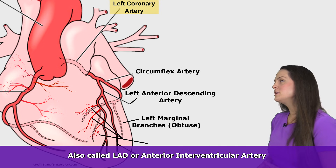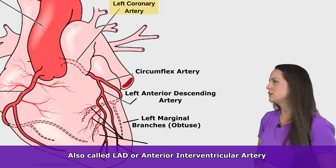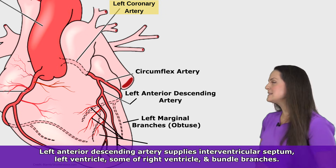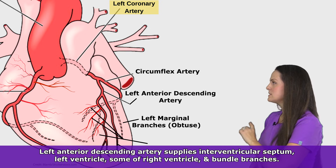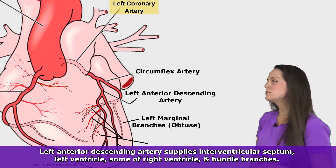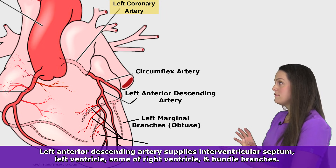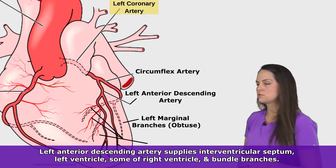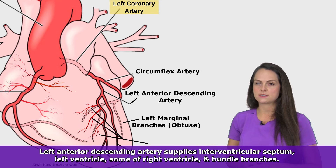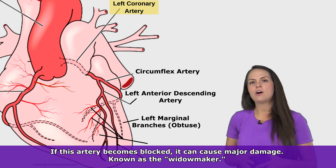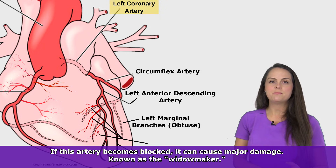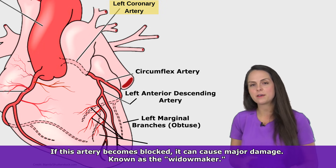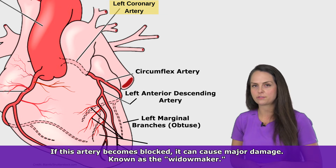The LAD can also be referred to as the anterior interventricular artery. This artery has a big job — it supplies our interventricular septum, the left ventricle, some parts of the right ventricle, and the bundle branches of our electrical conduction system. If this artery becomes blocked, it can cause major damage. You may have heard the term 'widow maker' — that refers to this artery, because a complete blockage here can severely damage the heart.